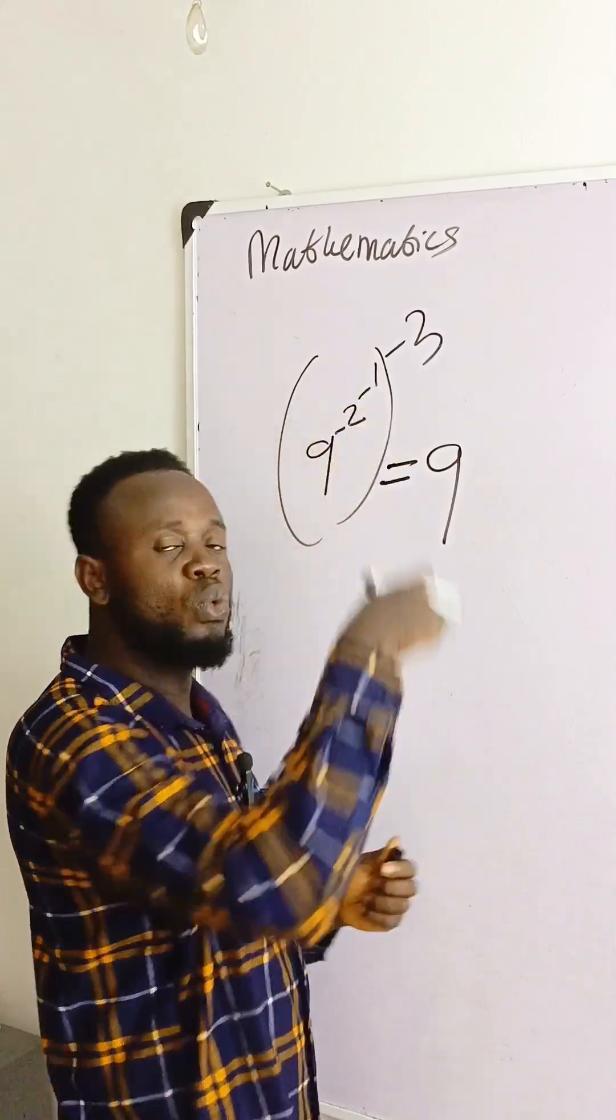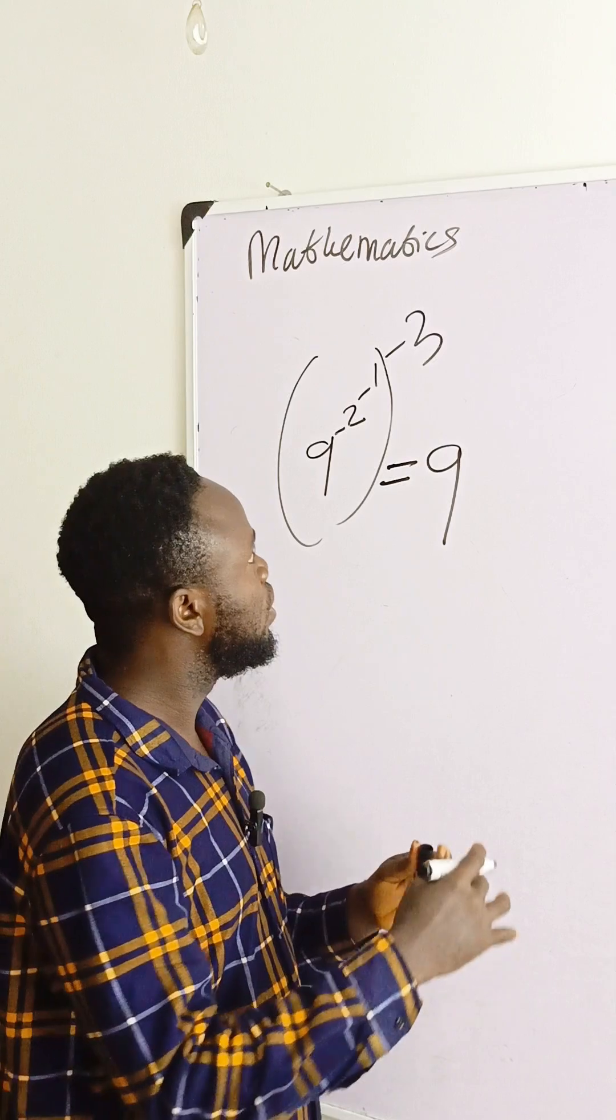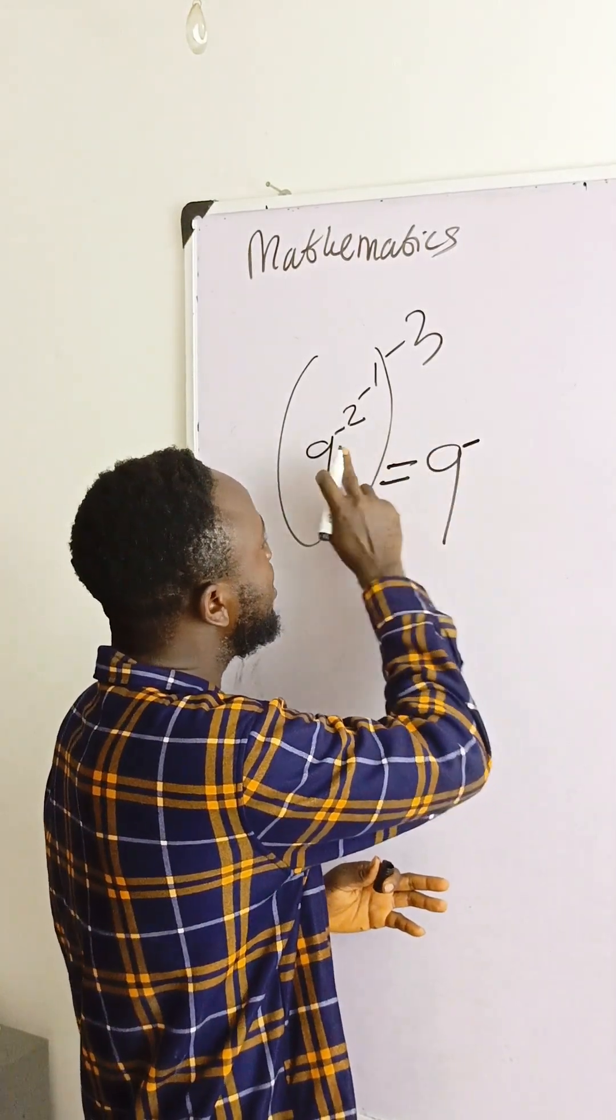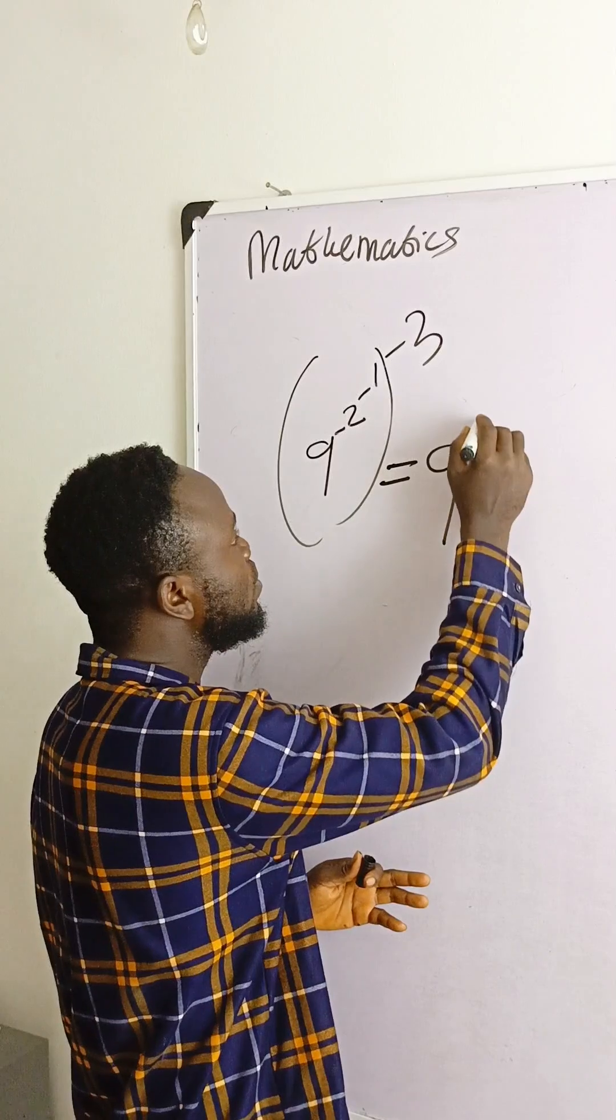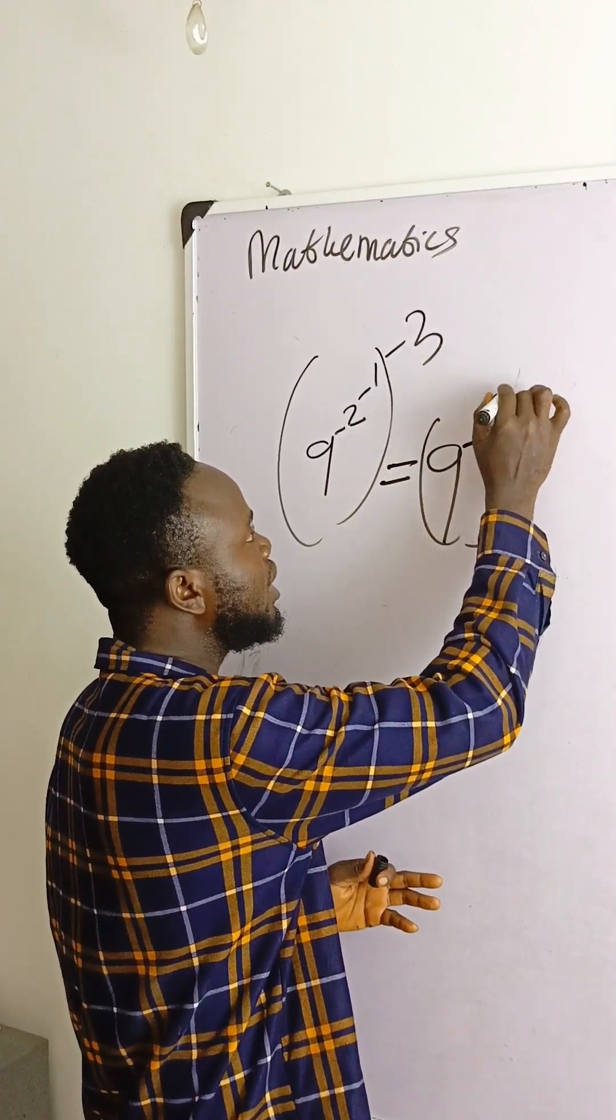This 2 raised to power minus 1, from the negative law of indices, the negative power law of 2 raised to power minus 1 is 1 over 2. So we are going to have here 9 raised to power minus 1 over 2, then raised to power minus 3 that we have there.